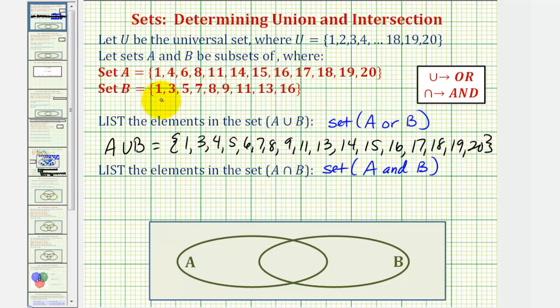Let's highlight those. Notice how 1 is in both A and B, so is 8, so is 11, and so is 16. So these four elements are in both A and B, and therefore A intersect B contains the elements 1, 8, 11, and 16.